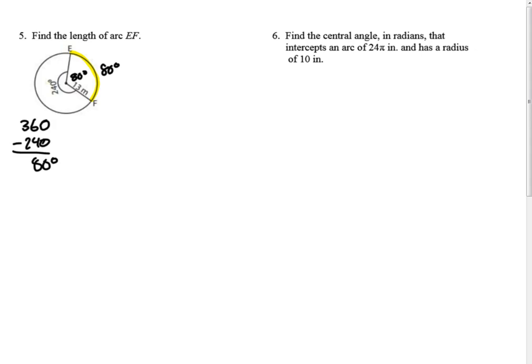That arc would be 80 degrees. The degrees is not the length. So it's the central angle divided by 360 equals the length, the arc length, divided by all the way around the circle, which is the circumference, the perimeter of a circle, d pi.